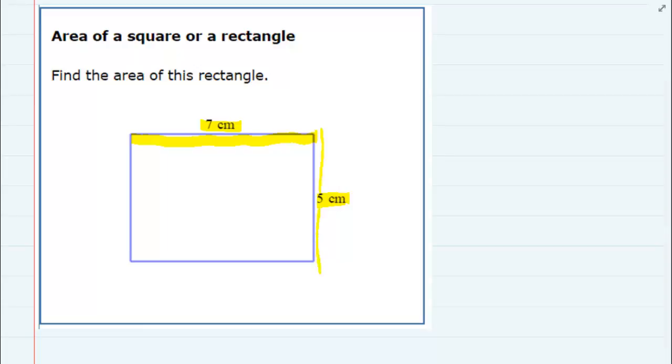The formula for the area of a rectangle is area equals length times width. Now if this would have been a square, the length and the width would have been the same length, but we've got seven centimeters and five centimeters.